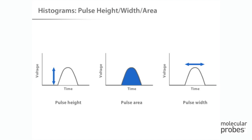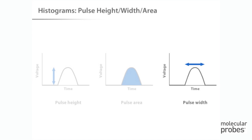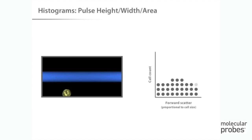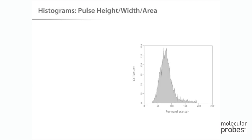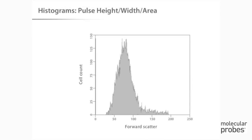Depending on the flow cytometer system, either pulse height or pulse area is used to quantify the size of the voltage pulse. Pulse width is used in certain special situations, such as DNA analysis, where it is important to distinguish single cells from double cell events. Once the pulse has been converted into a numerical value, that value can be used to plot the intensity of the event.